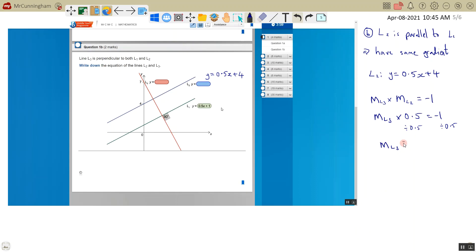You can do that in your calculator. What you get is -1 divided by 1/2, which is -2. Another way you can think of it is if the gradient of L2 is 1/2 or 0.5, then the gradient of anything perpendicular to it—you flip it, so flip 1/2 becomes 2/1 or just 2, and then change the sign. That's just another way you can think of it.